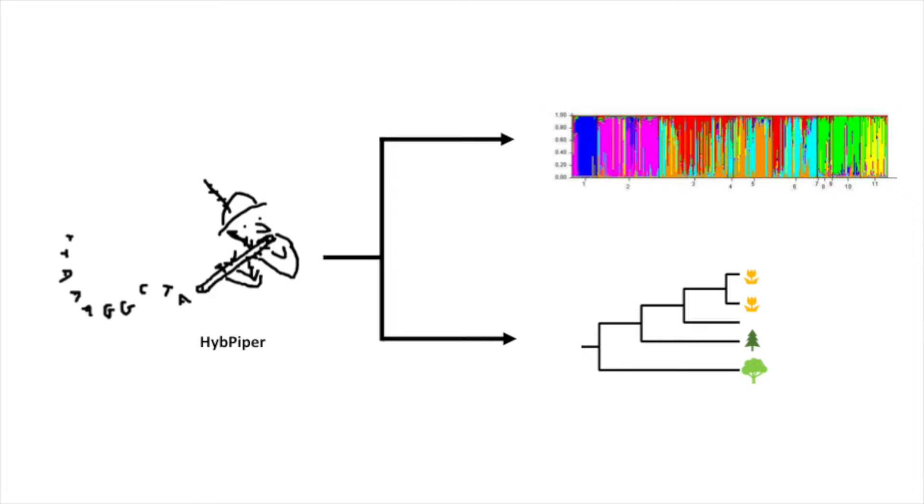For a population genetic study, you can produce a graphic depicting the genetic structure of many populations. Or for a phylogenetic study, a tree displaying relationships between organisms can be made.